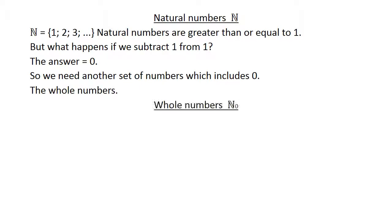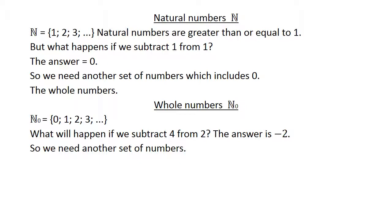The whole numbers. They are all the natural numbers and also it includes 0. But what will happen if we subtract 4 from 2? The answer is negative 2. So we need another set of numbers. The integers.